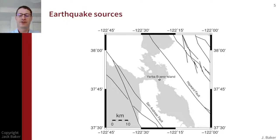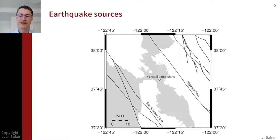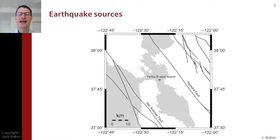The first thing we need is a model for earthquake sources. We think about a particular location — for example, Yerba Buena Island near San Francisco in California. We look in some radius around that location and ask where the sources of earthquakes could be. In this case the black lines are surface projections of known earthquake sources in the area, such as the Hayward fault and the San Andreas fault. There also could be occurrences of earthquakes that are not on known faults, and we'll consider that as well. For each of those sources we want to think about how often earthquakes would occur and how large those earthquakes could be.